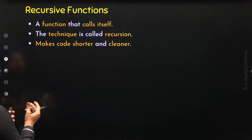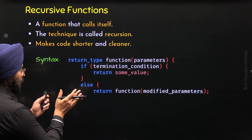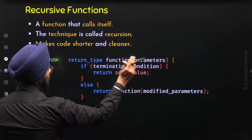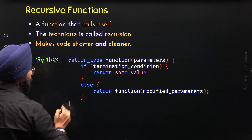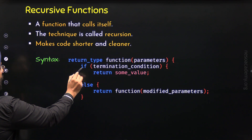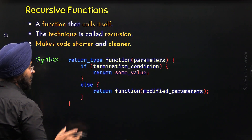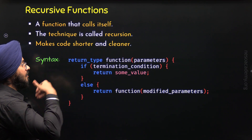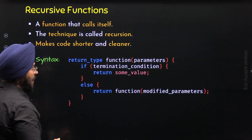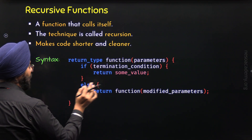Now let's see how a recursive function looks by considering its syntax. We need to specify the return type, then the name of the function, and then the parameters. Within the braces, we write an if block and an else block. The if block contains the termination condition, which is quite important to terminate the function, because without it the recursive function will run forever. Based on this condition, some value will be returned.